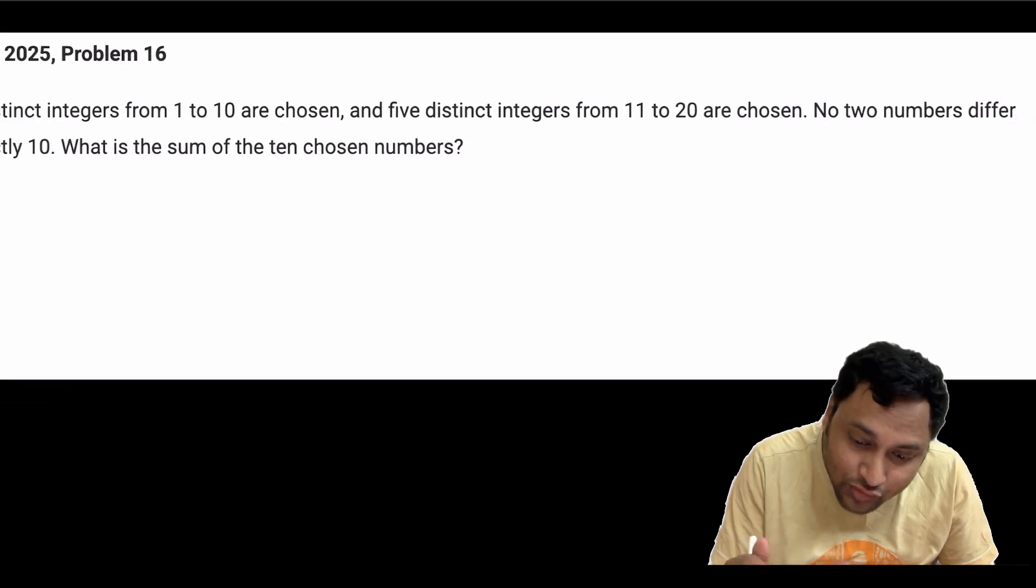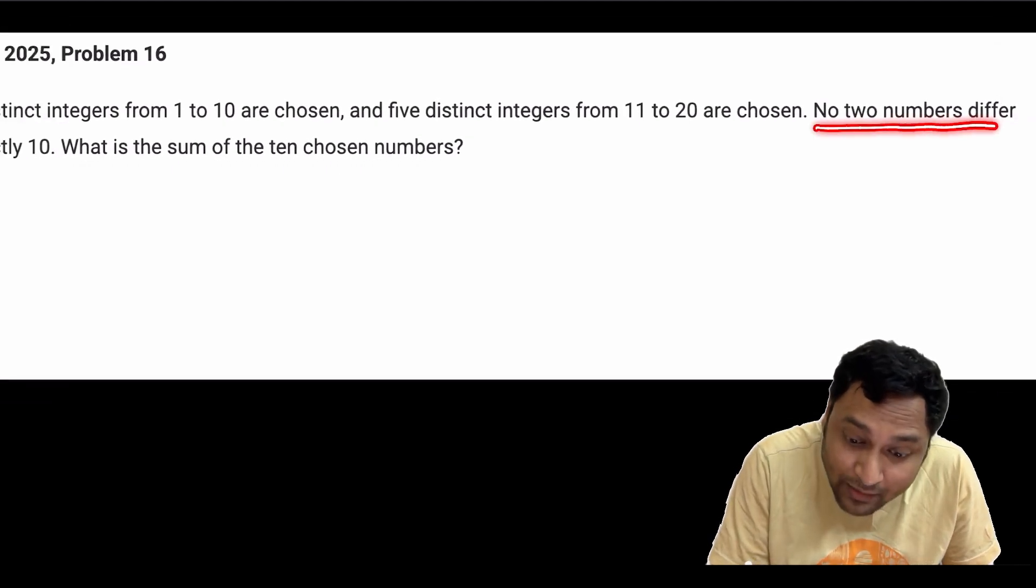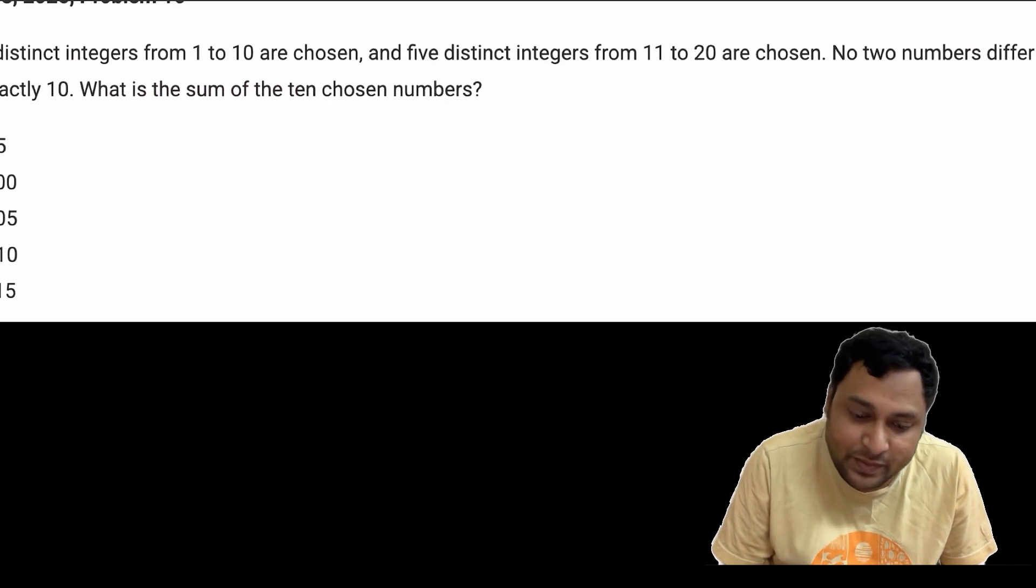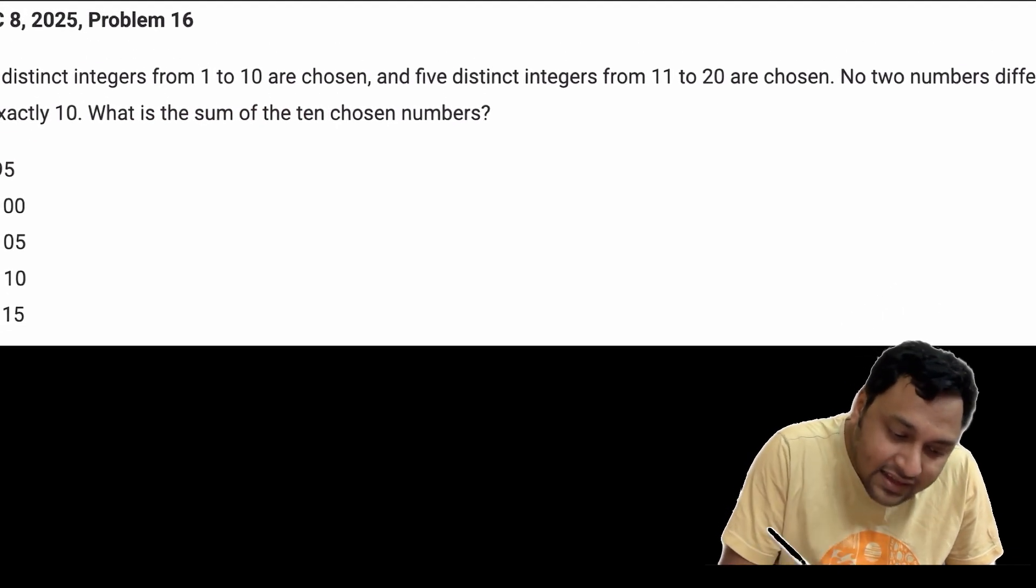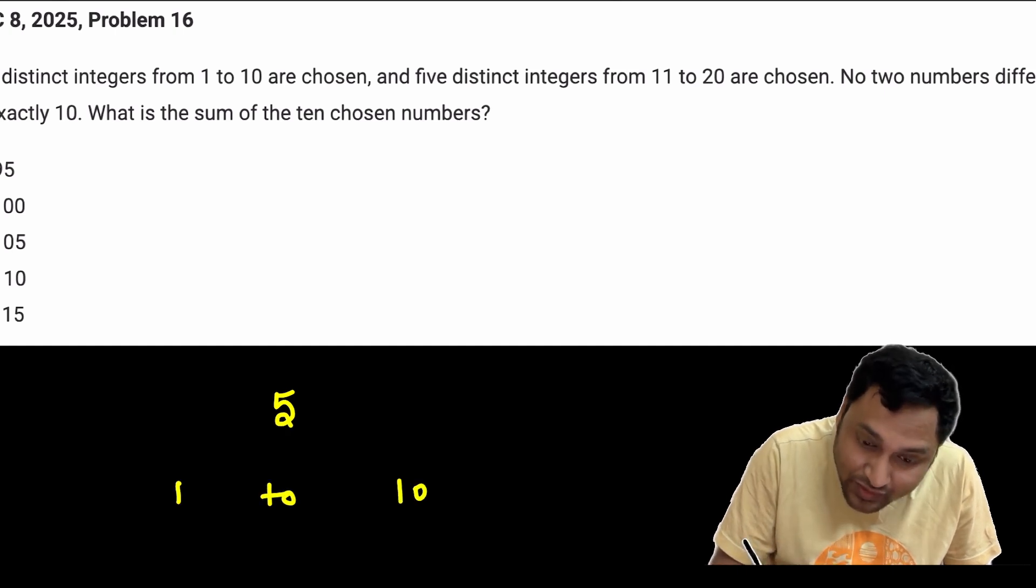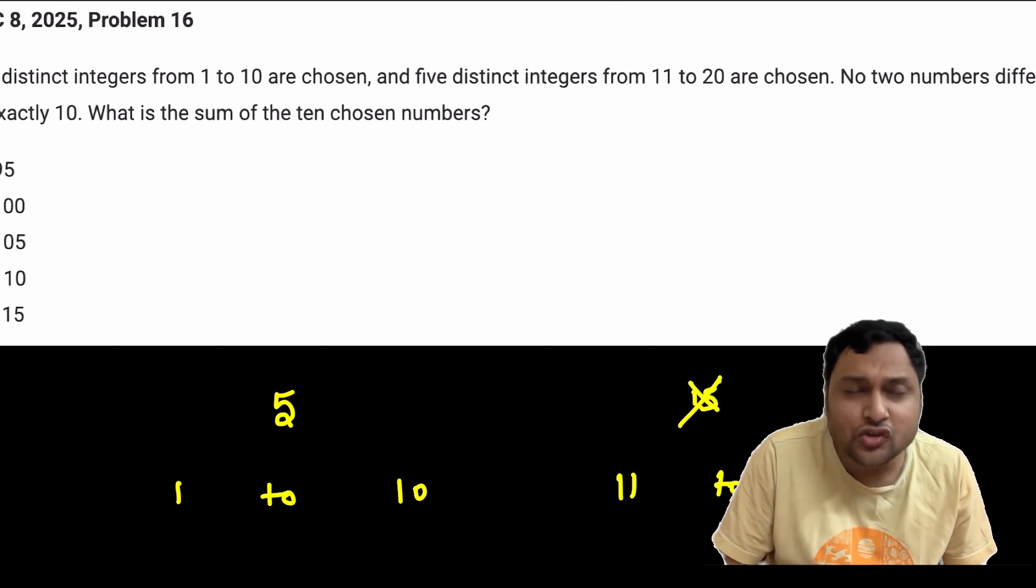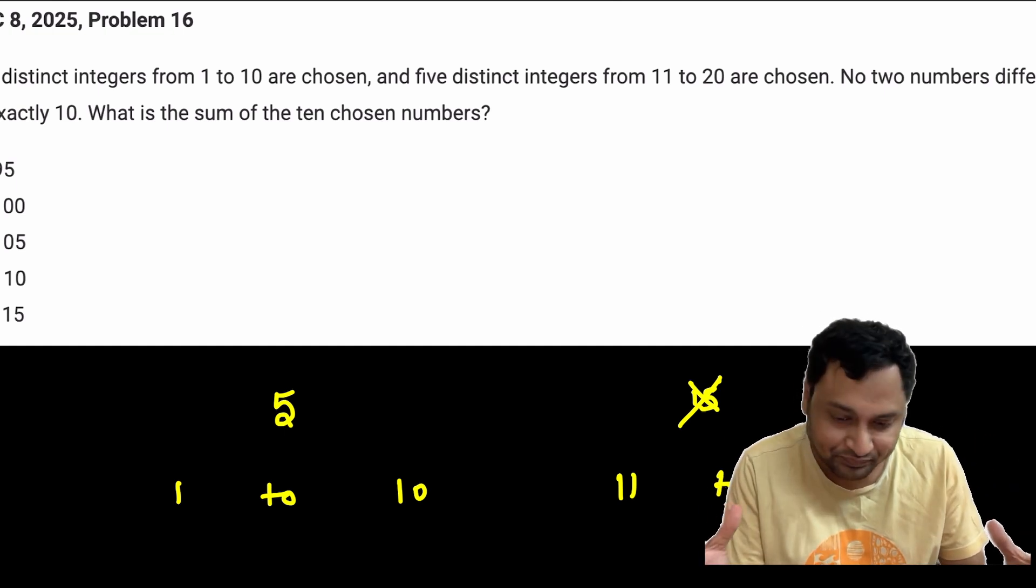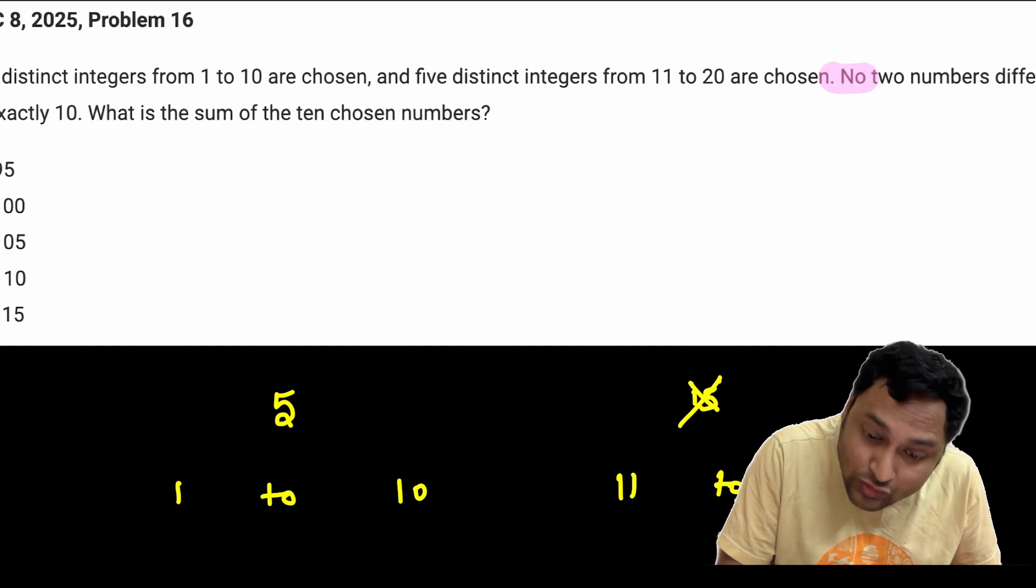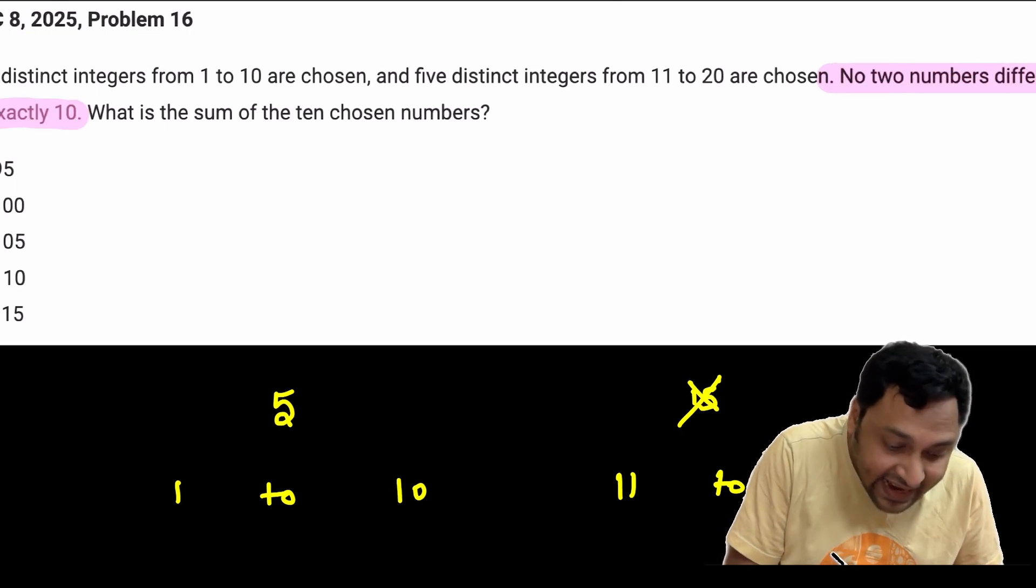There is one condition. No two numbers can differ by exactly 10. Which basically means that if you are selecting the number 5 from 1 to 10, you cannot select the number 15 from 11 to 20. You have to choose some other number. No two numbers differ by exactly 10.